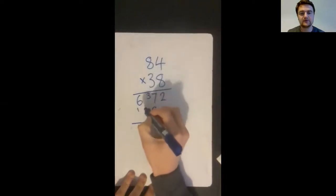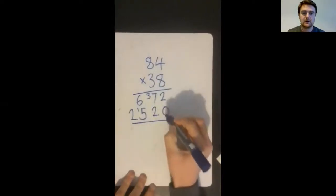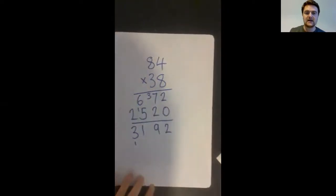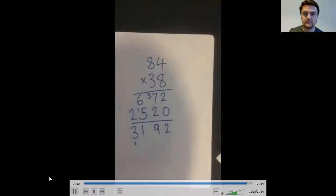Four times three is 12, which I can't fit in one. So I have to carry the one over. Eight times three is 24. Add the extra one is 25. And then all I need to do is add those numbers up at the end.